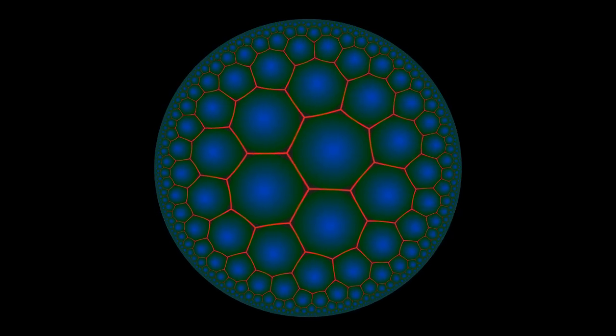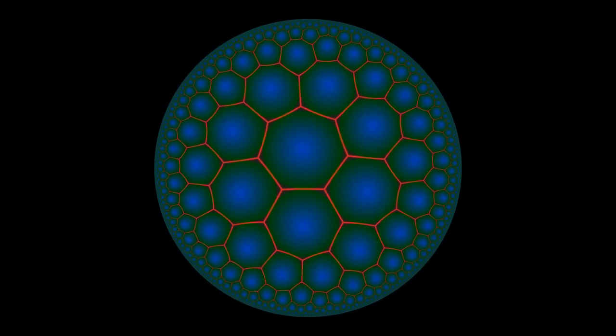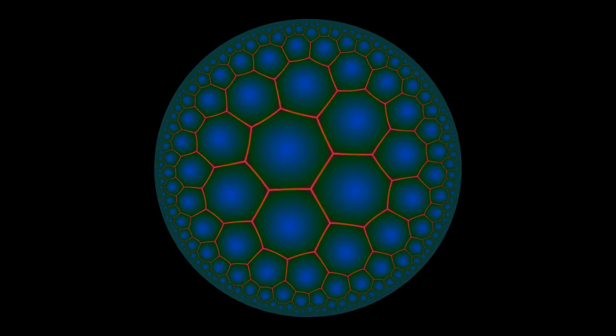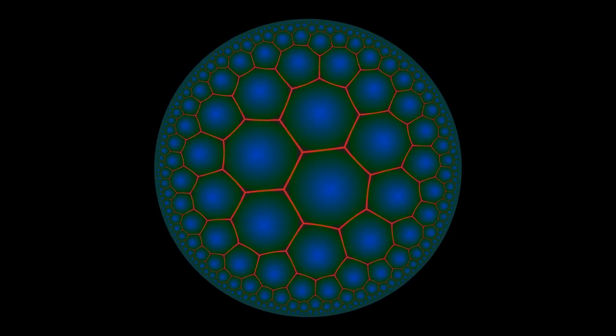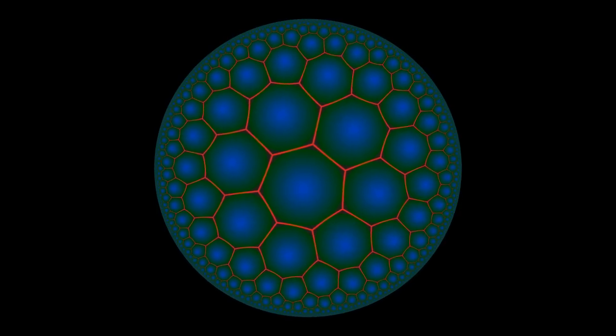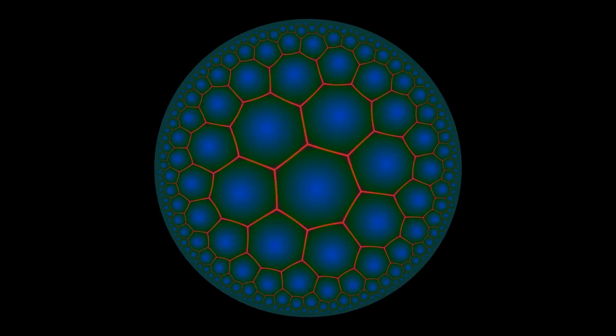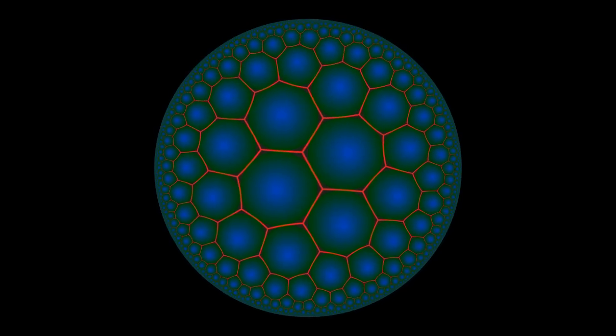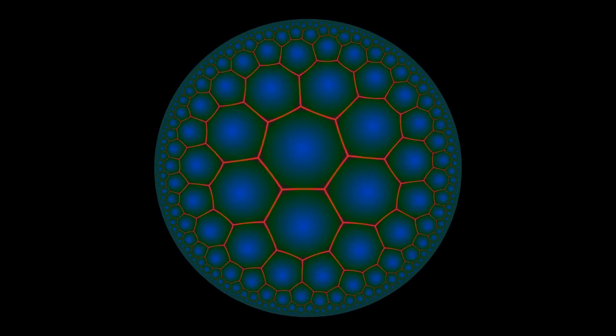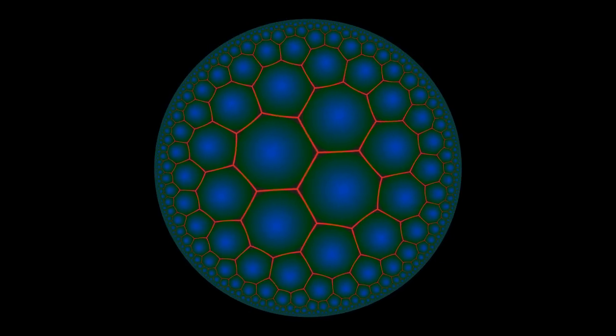Like stereographic projection of the sphere, the Poincaré Disc model is conformal, meaning that it preserves angles and small shapes. Also like stereographic projection, it is azimuthal and maps circles to circles, but does not preserve their centers. Unlike stereographic projection of the sphere, this one maps the entire space to a disk, whose edge is the so-called circle at infinity, or circle of ideal points.